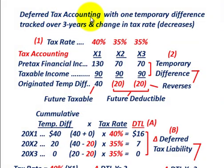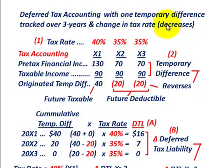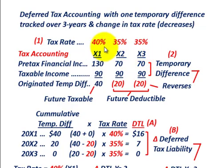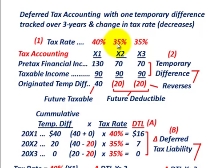Here we're going to be going over an example in deferred tax accounting where we're going to have one temporary difference tracked over three years, and we're going to have a change in our tax rate — specifically, the case where the tax rate actually decreases. So for year X1, the tax rate is at 40%, but then for the next two years, X2 and X3, it's reduced from 40% down to 35%.